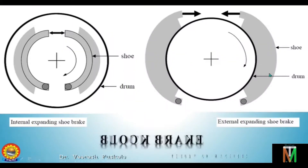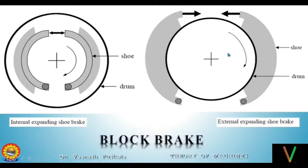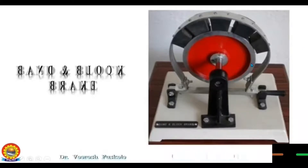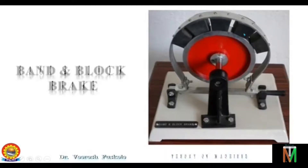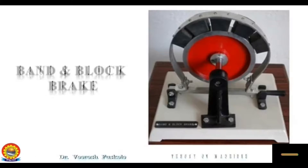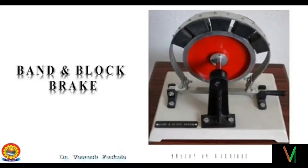This is the external expanding shoe brake. In this, the drum is pressed by the two shoes from the outer periphery. This is the band and block brake. It consists of a number of wooden blocks secured inside a flexible steel band. When the brake is applied, the blocks are pressed against the drum. The two sides of the band become tight and slack as usual. Wooden blocks have a higher coefficient of friction, thus increasing the effectiveness of the brake.